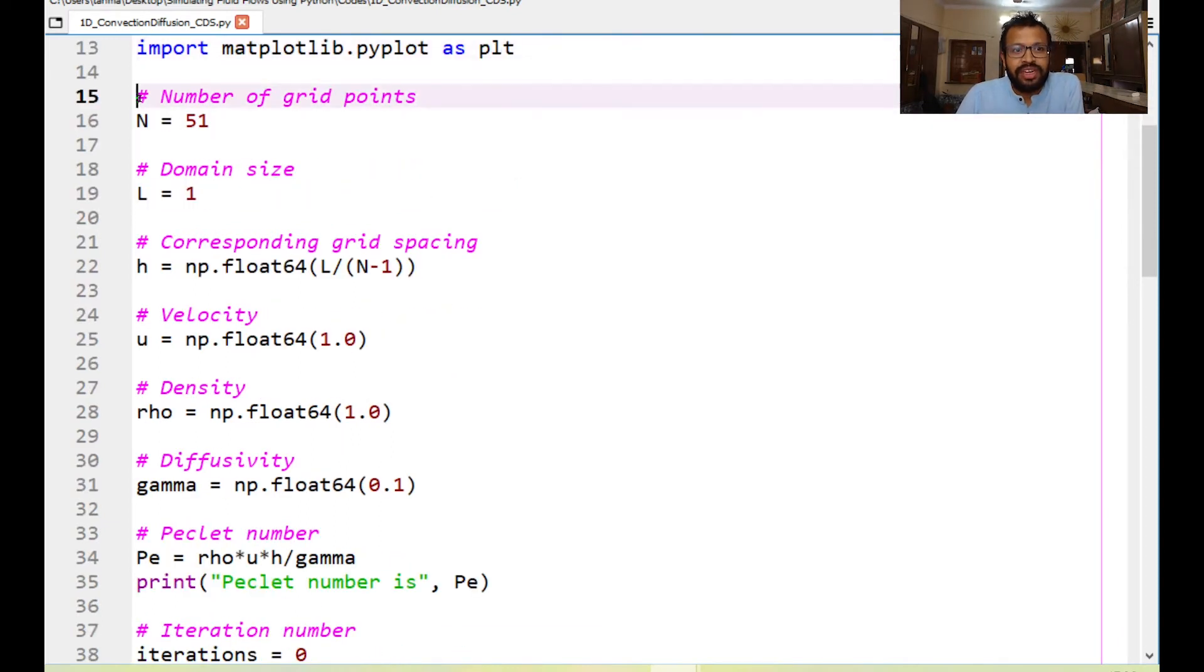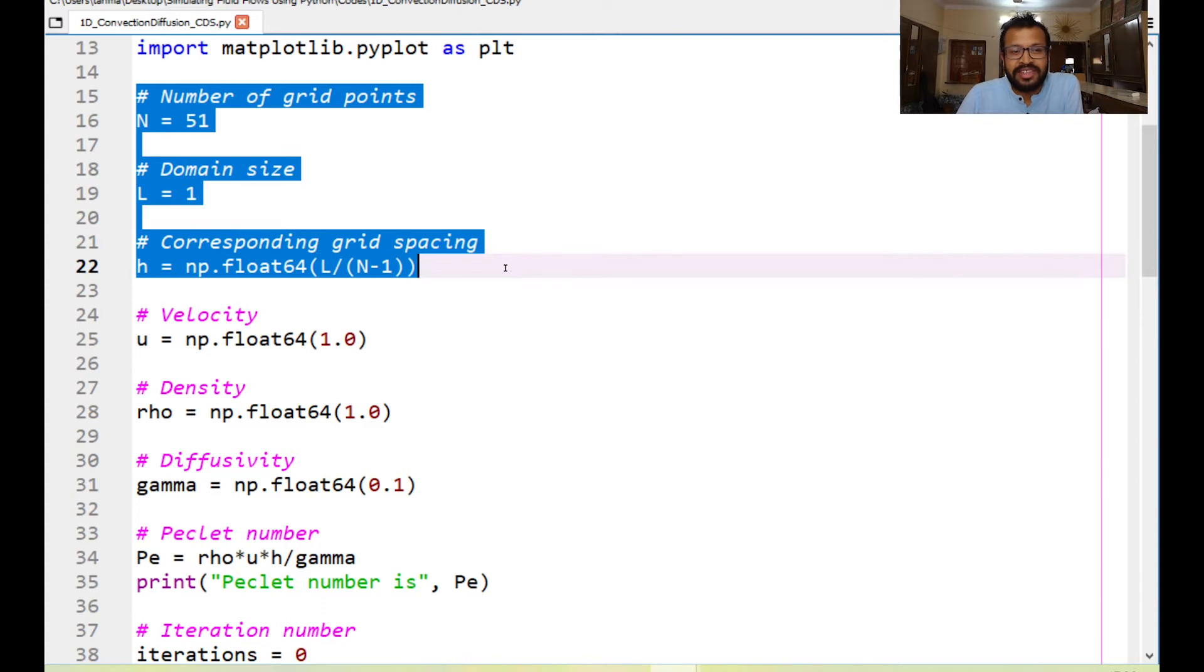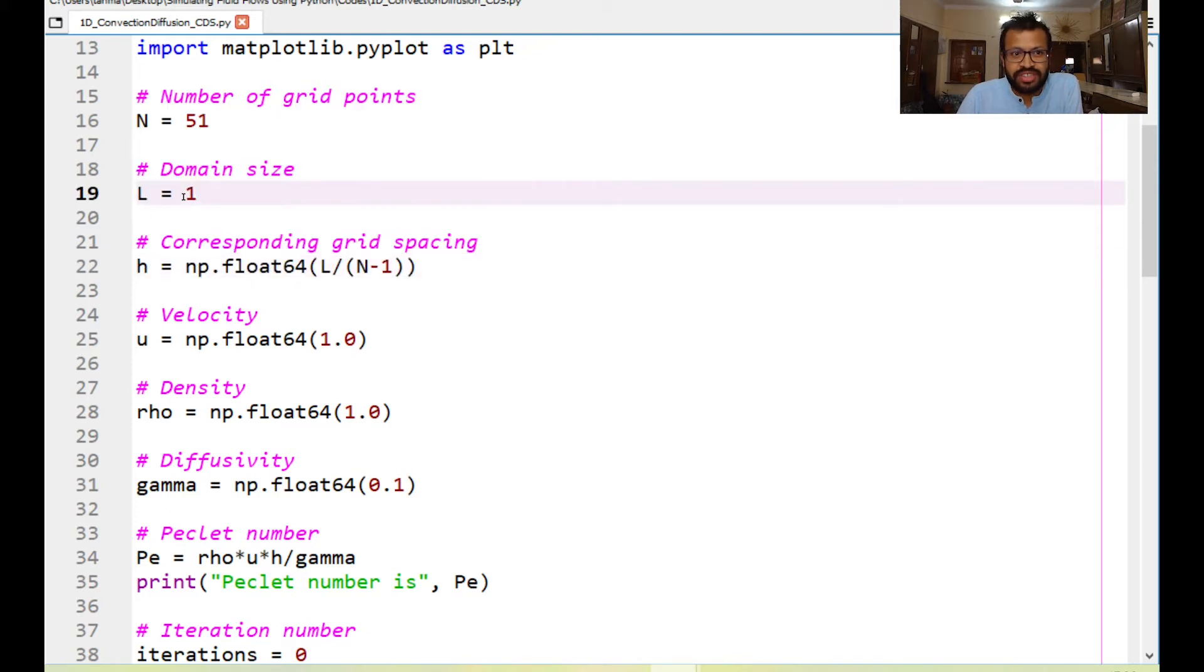After that we define certain grid properties that is the number of grid points, the domain size, and the grid spacing. So here you could change this for example the domain size if you want it to exactly match the problem that we had looked at you can change it to 0.5.